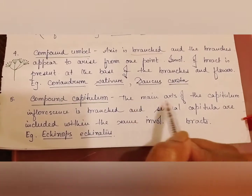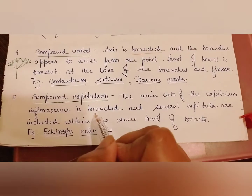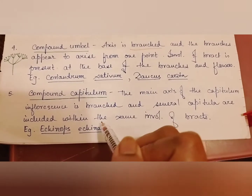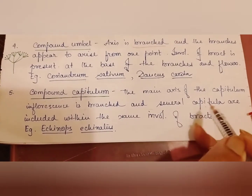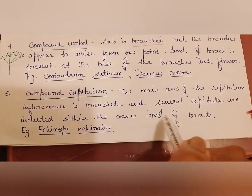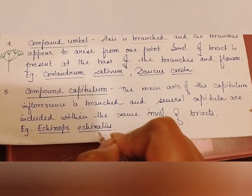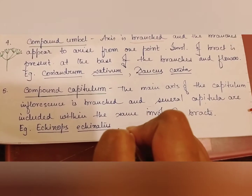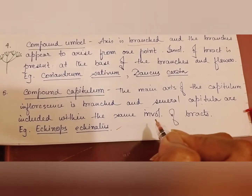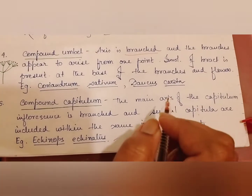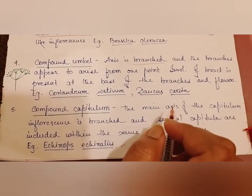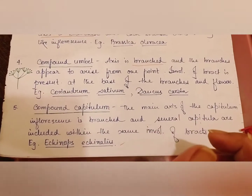Finally, compound capitulum: the main axis of the capitulum inflorescence is branched and several capitula are included within the same involucre of bracts. It is found in Echinops and Echinatus. This completes our study of racimose inflorescence.